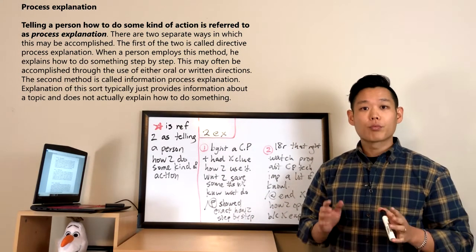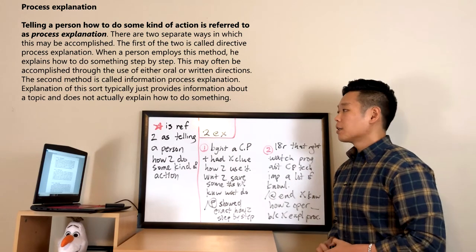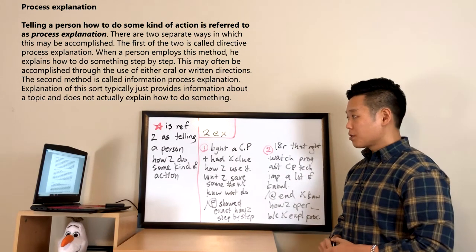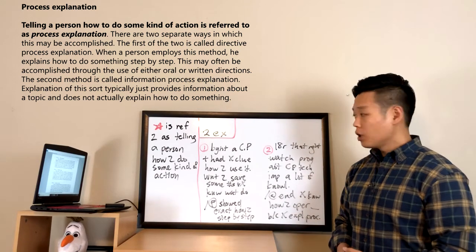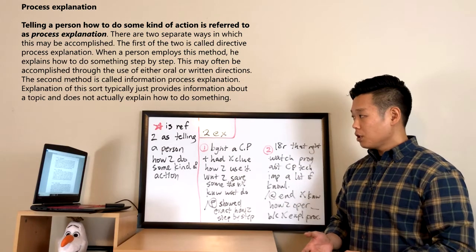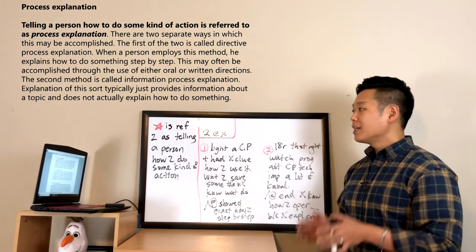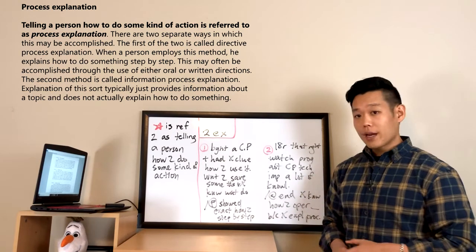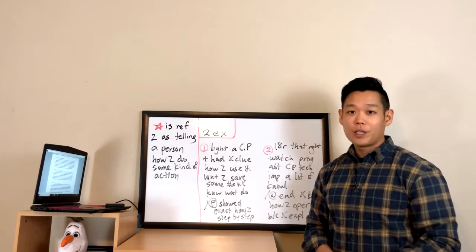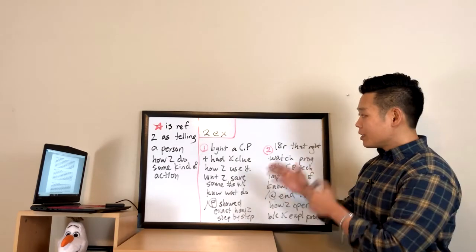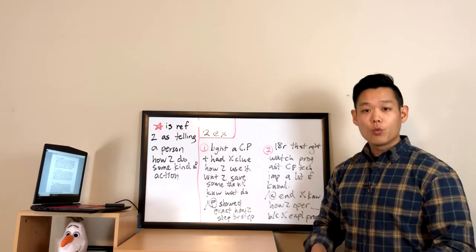The reading passage topic is process explanation. The first sentence: telling a person how to do some kind of action is referred to as process explanation. So process explanation is telling a person how to do some kind of action — that's your definition. We have it with no grammar mistakes and no misinterpretations, so we're good to go.